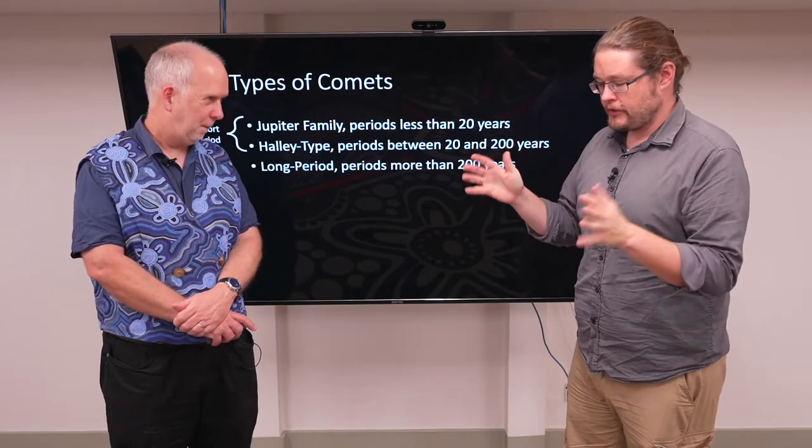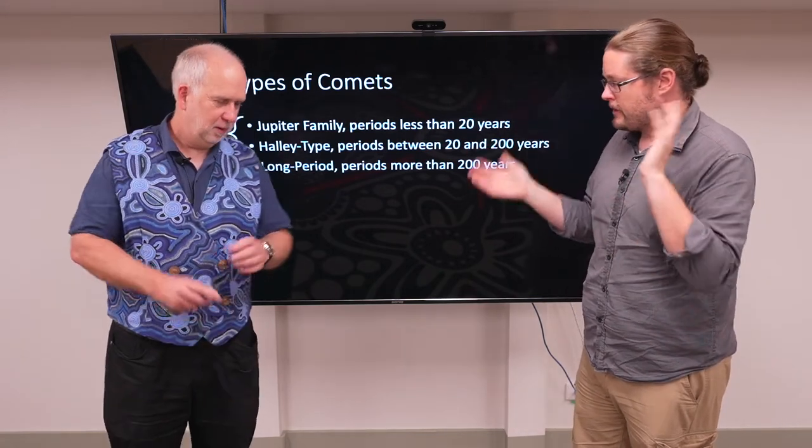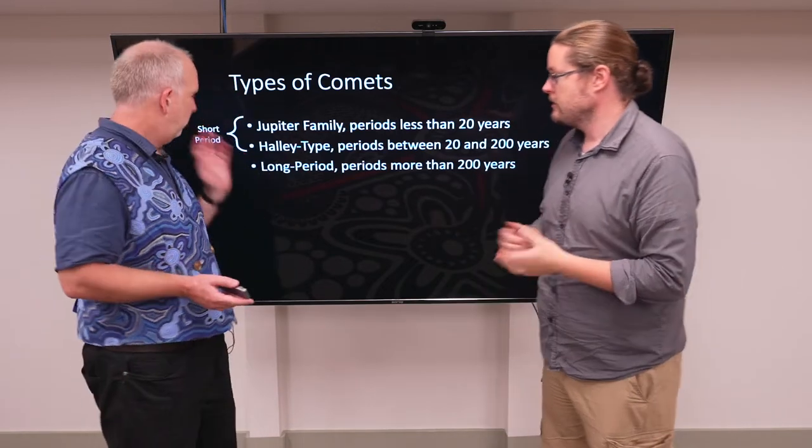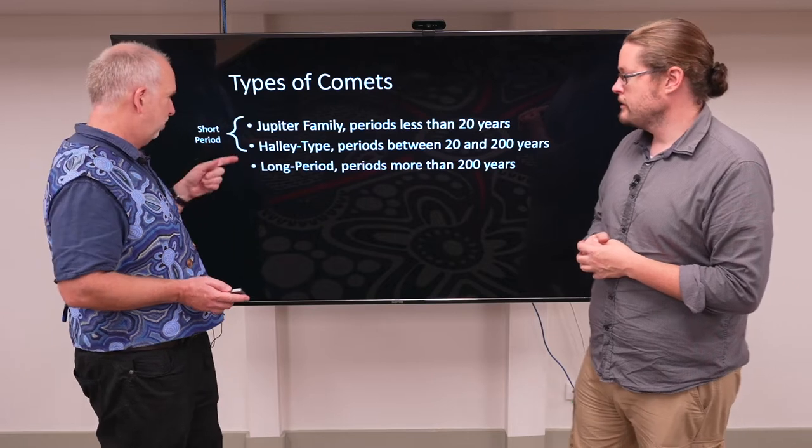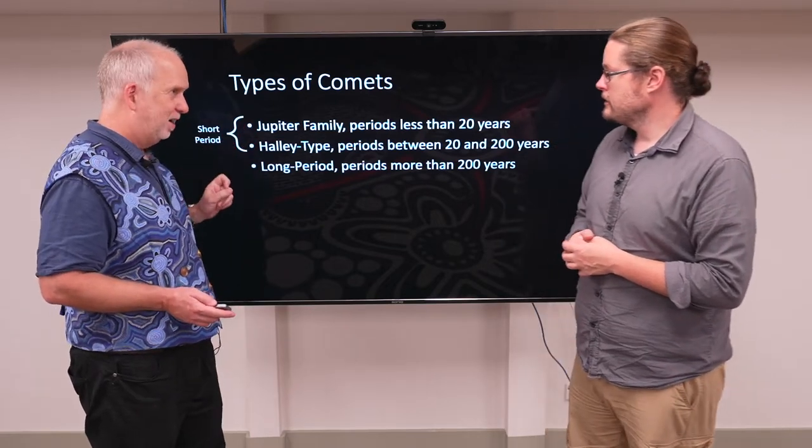Alright, so if comets are dirty snowballs, are they all the same type or are they different types? Well, they're different types. Sometimes you call them short period and long period. The short period are divided into the Jupiter family and the Halley type.